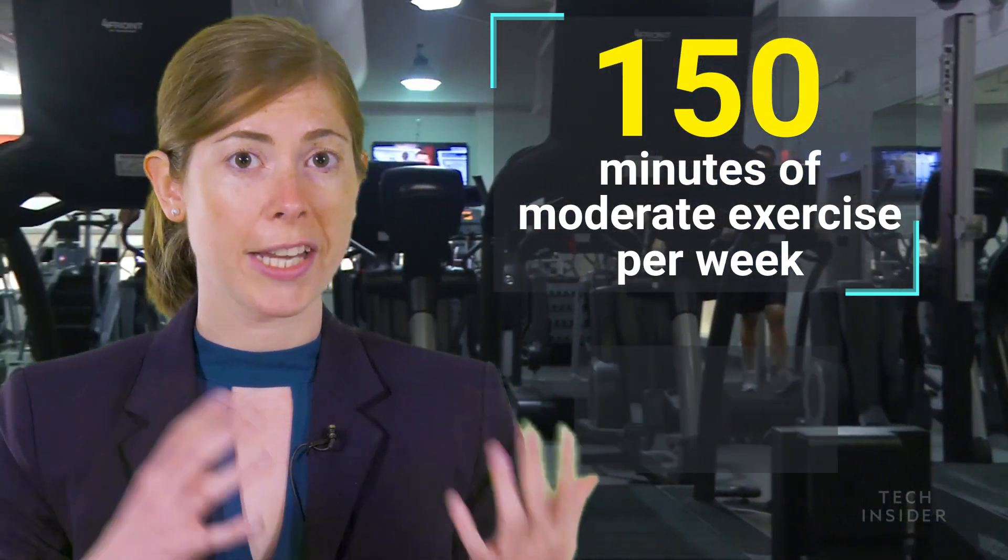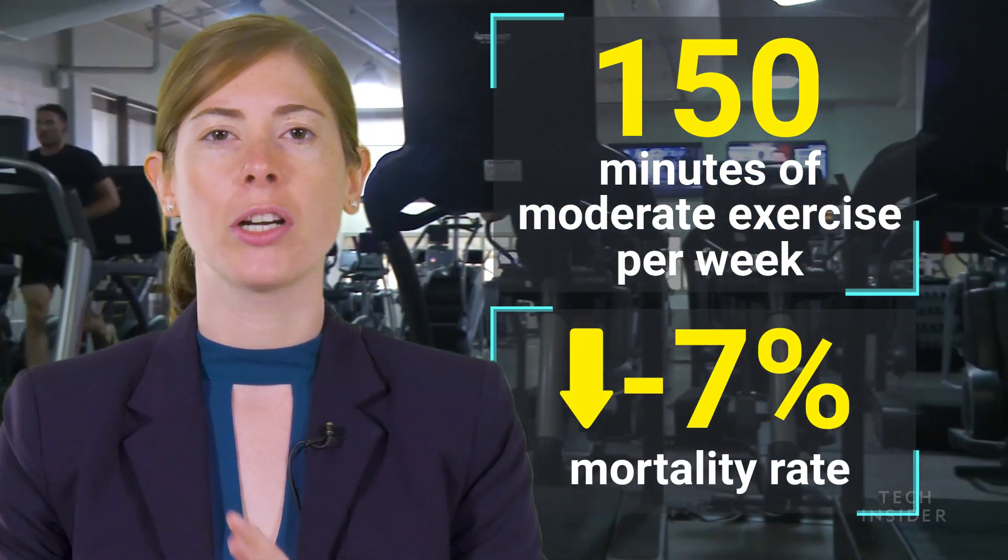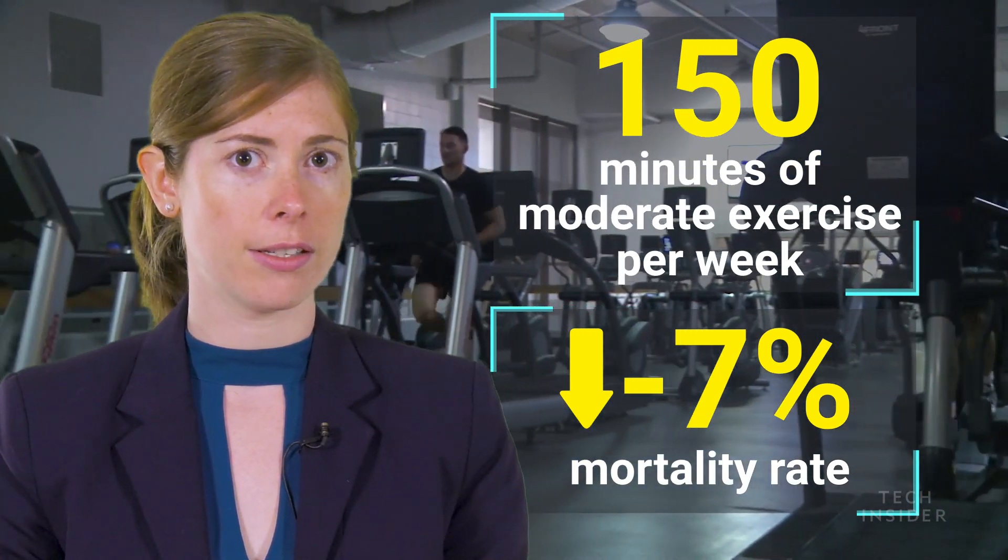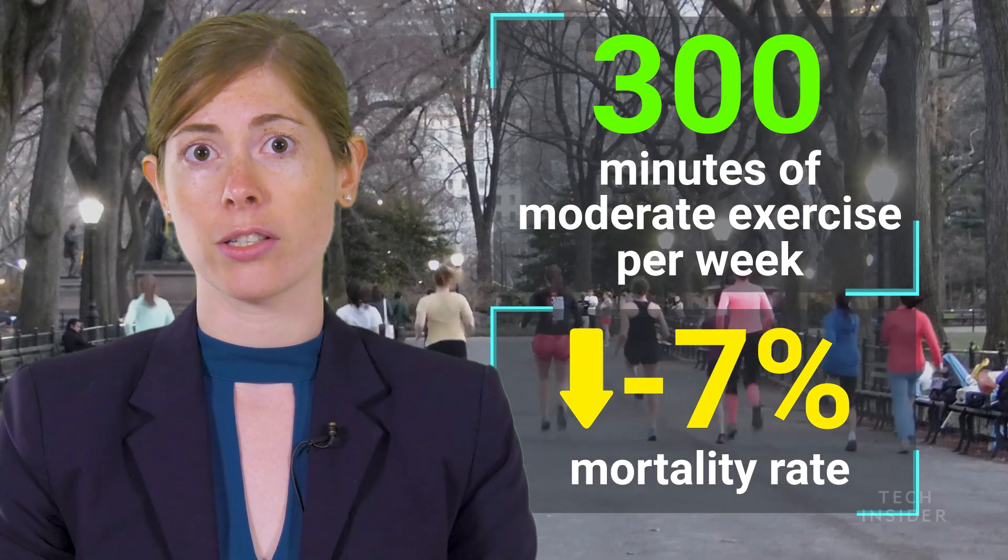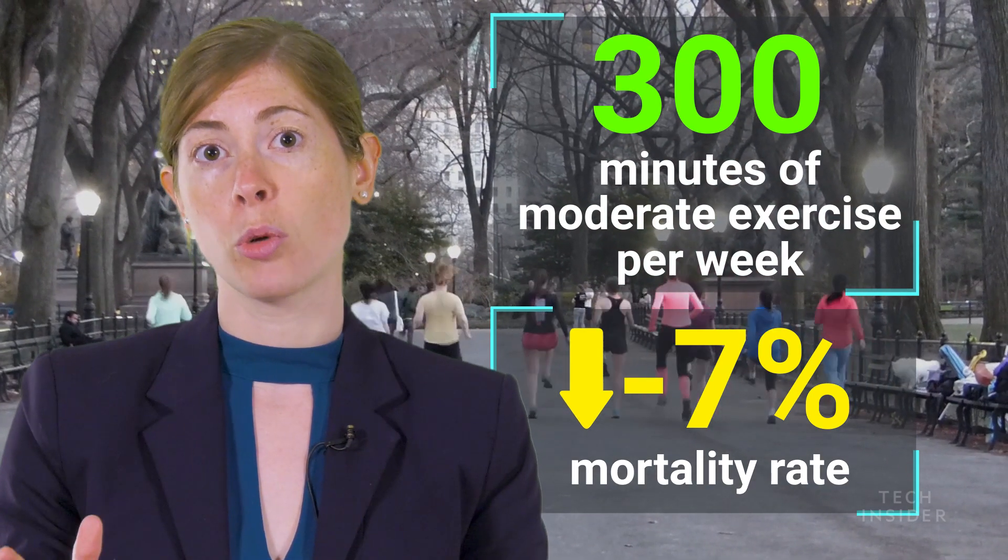150 minutes of moderate exercise a week has been shown to reduce your overall mortality rate by 7% compared to if you were just sitting around all day and not exercising at all. Now, if you increase that amount of time to 300 minutes of moderate exercise a week, that can actually reduce your overall mortality rate by 14%. Not bad.